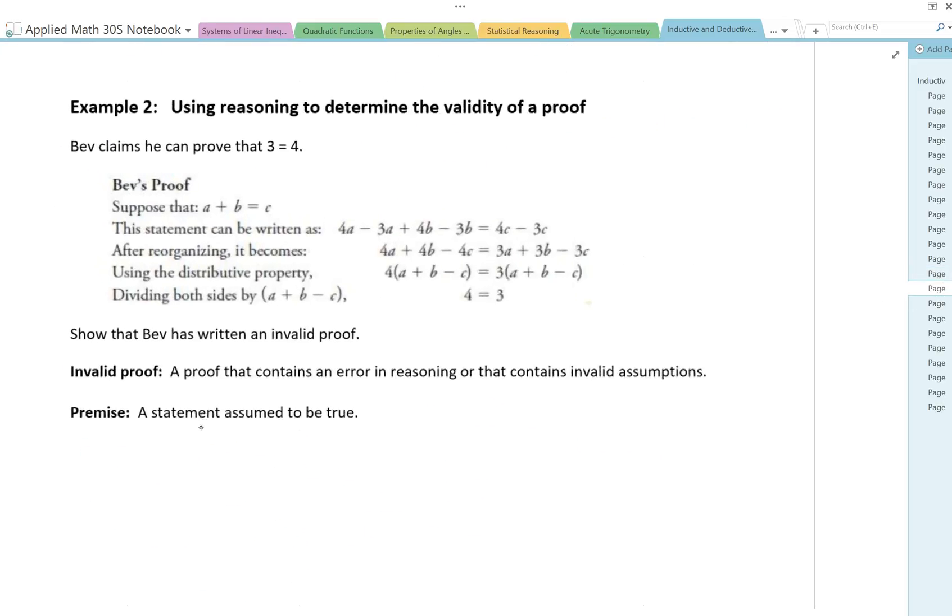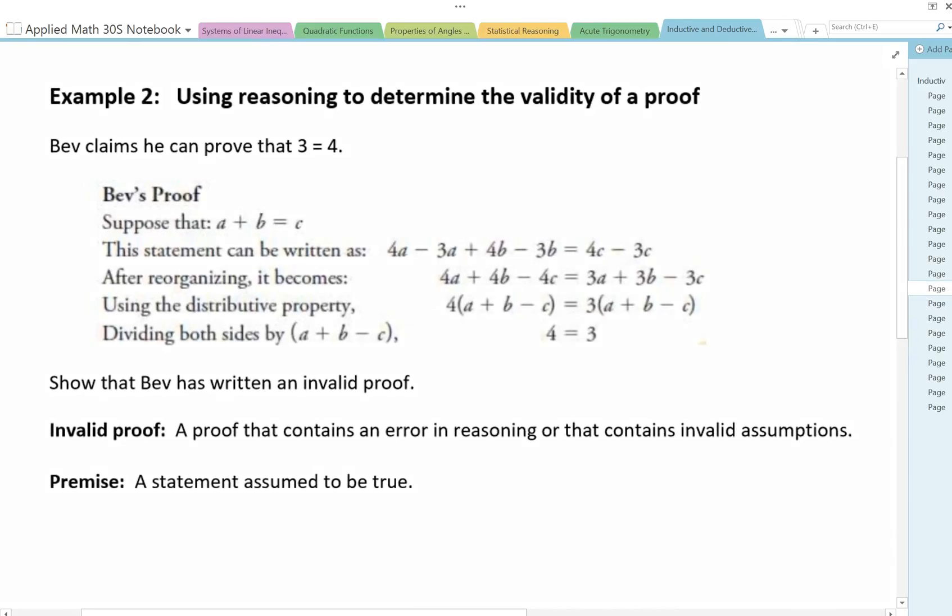Let's take a look at example two, using reasoning to determine the validity of a proof. Bev claims that he can prove that three equals four. Here's Bev's proof. Suppose that a plus b equals c. The statement can be written as 4a minus 3a plus 4b minus 3b equals 4c minus 3c. After reorganizing, using the distributive property and then dividing both sides, he gets that four is equal to three. Show that Bev has written an invalid proof.